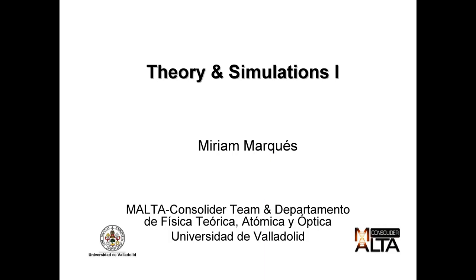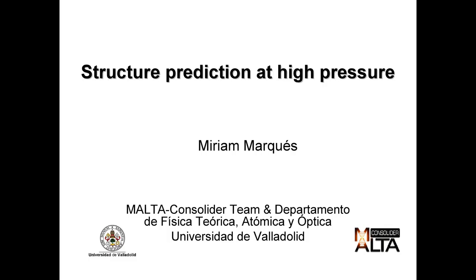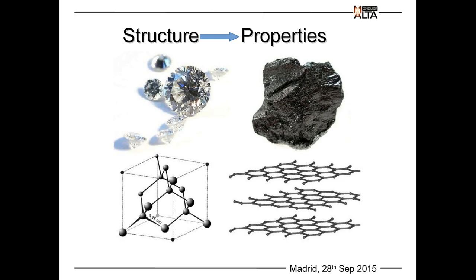I am starting the next block about theory and simulations, and I'm going to talk about crystal structure prediction at high pressure. The basis of the properties of a material is the structure. Given the structure, we can know if this material is soft, hard, or a superconductor — everything is hidden in the structure of a material. Since we are talking about crystals, we refer to the lattice parameters and the atomic positions.